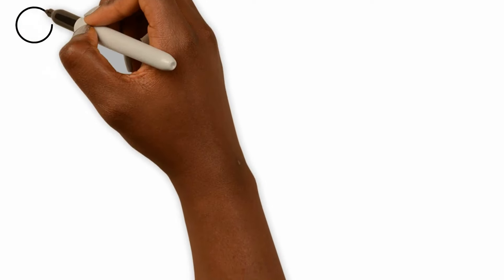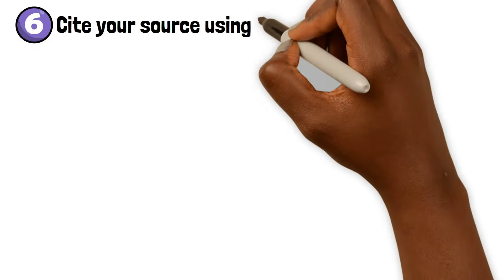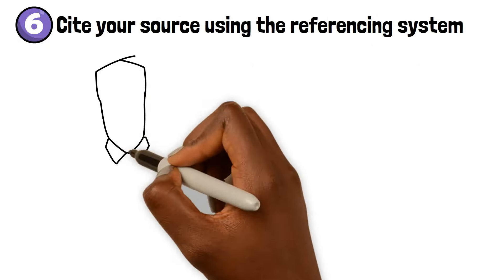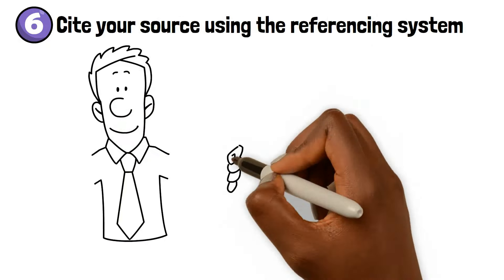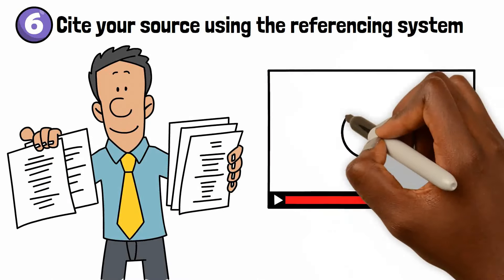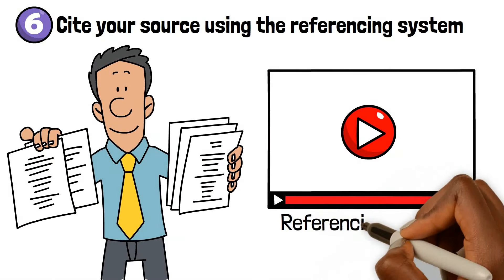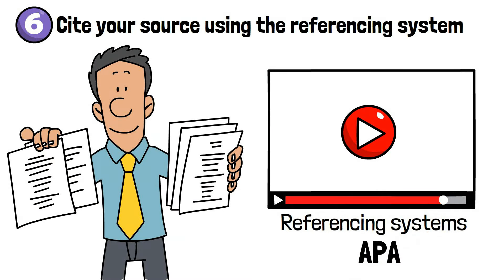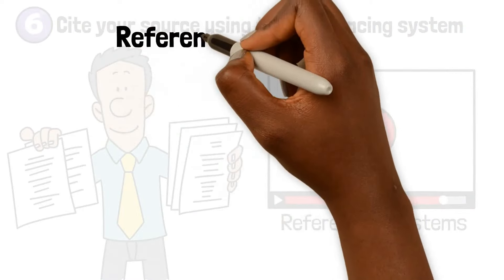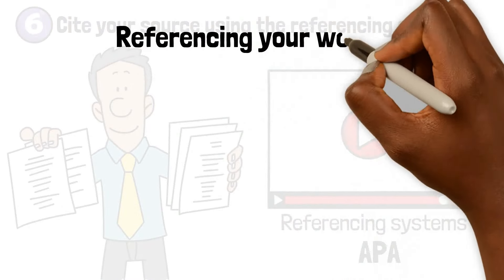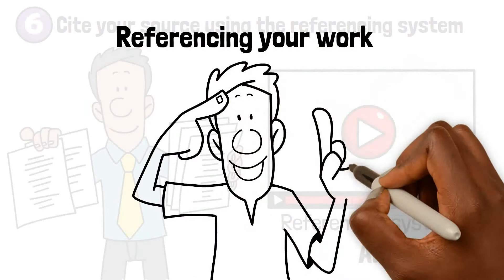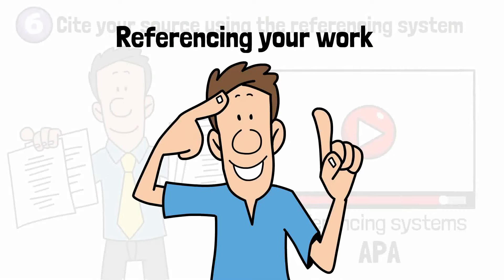Finally, step number six: cite your source using the reference system that your essay or paper requires. I will talk about referencing systems such as APA in another video. Referencing your work shows that you have acknowledged that the paraphrased ideas have come from someone else, which is the original source.